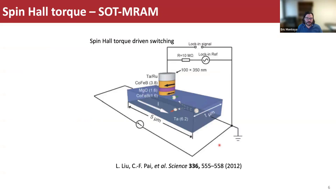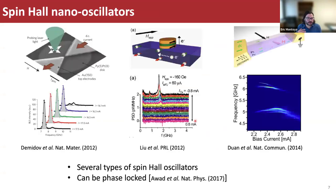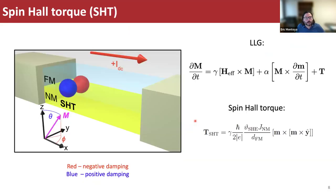The spin hall torque can be used to make memory devices — this is an example of a three-terminal MRAM device. It can drive persistent auto-oscillations to make a spin hall nano oscillator, of which many types have been shown. It's been shown that these can be phase-locked and entrained to one another, which is useful for neuromorphic computing. All of our studies are done in bilayer nanowire geometries. The x direction is along the nanowire length, z is normal to the surface, and y is given by the right-hand rule.